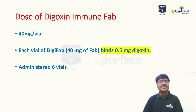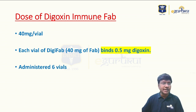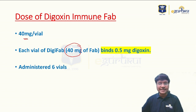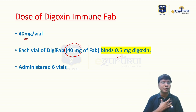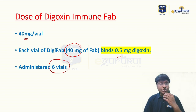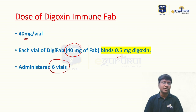Regarding the dose: one vial of Digoxin Immune Fab contains 40 milligrams of antibody, and 40 mg of this antibody will bind with 0.5 milligrams of digoxin. For this patient, I administered six vials. After administering six vials, the patient's toxic symptoms gradually reduced over a period of time.